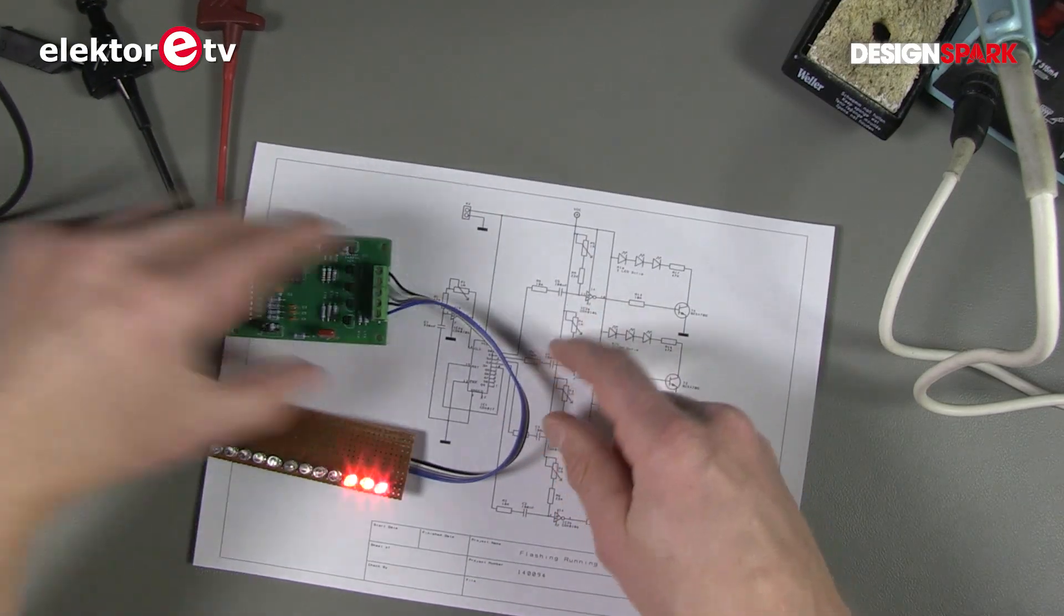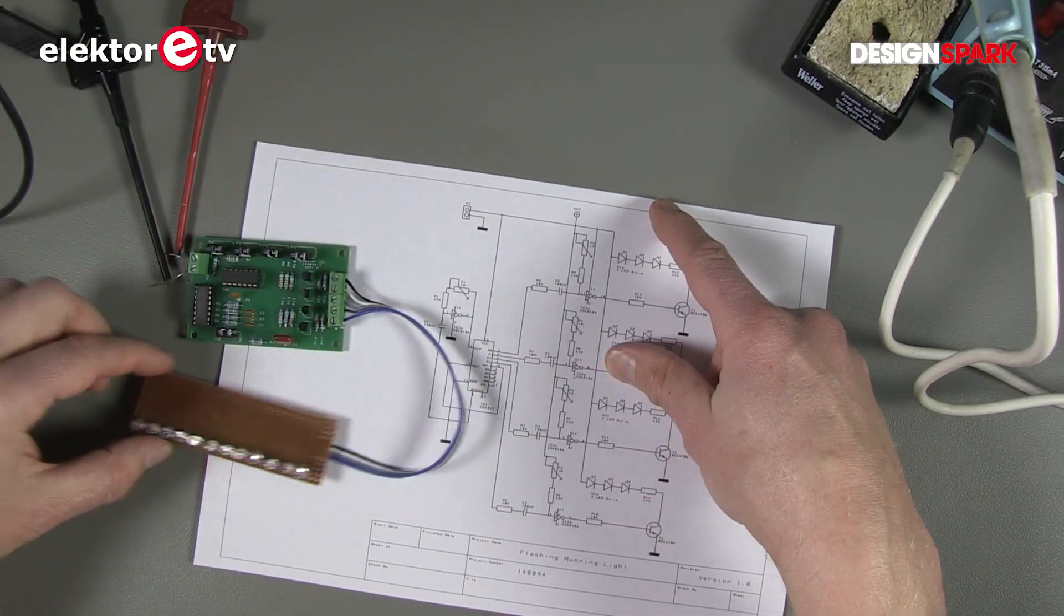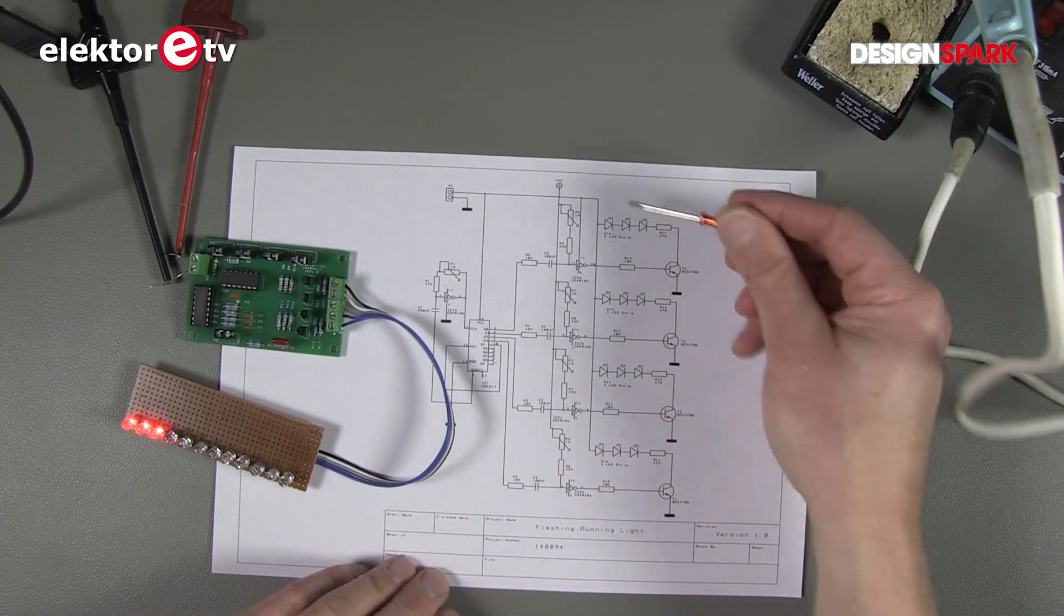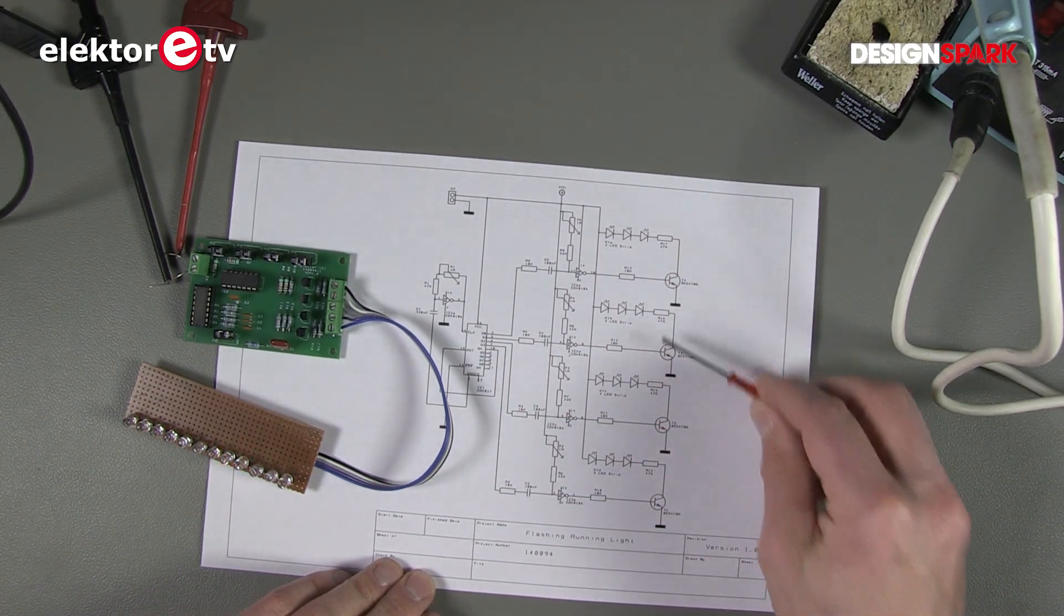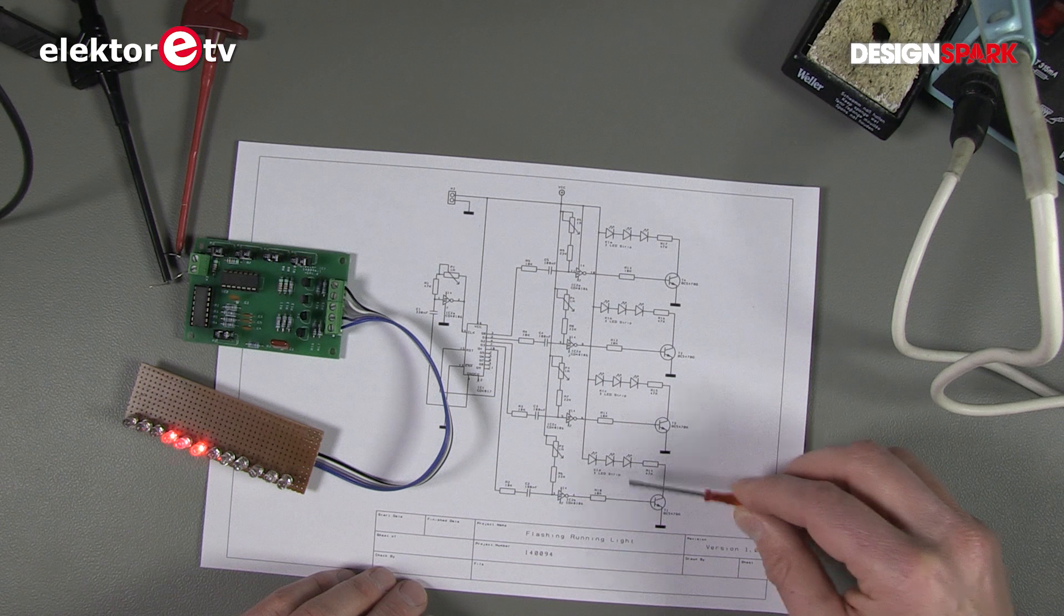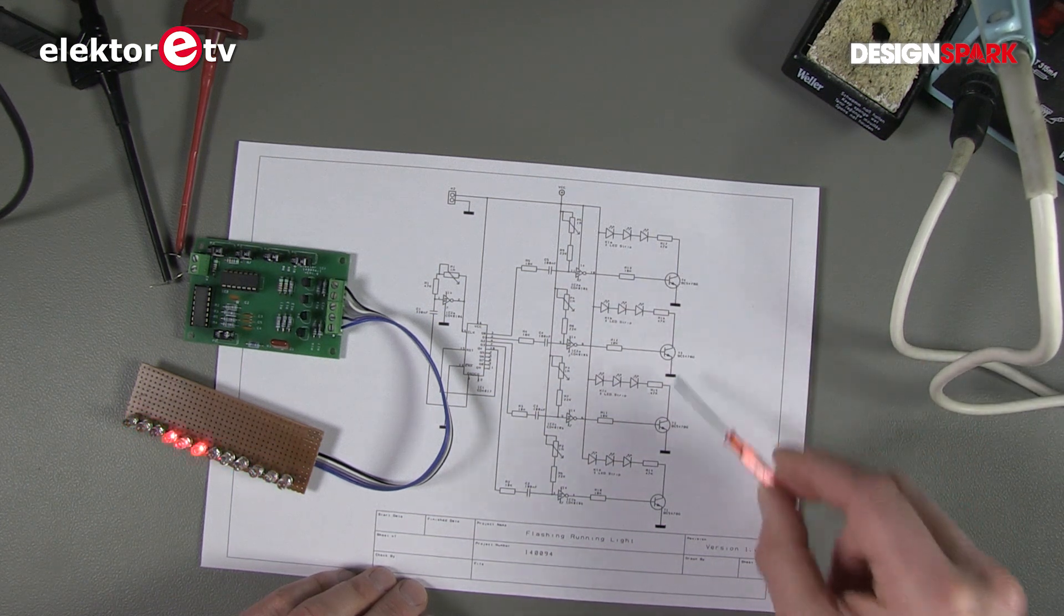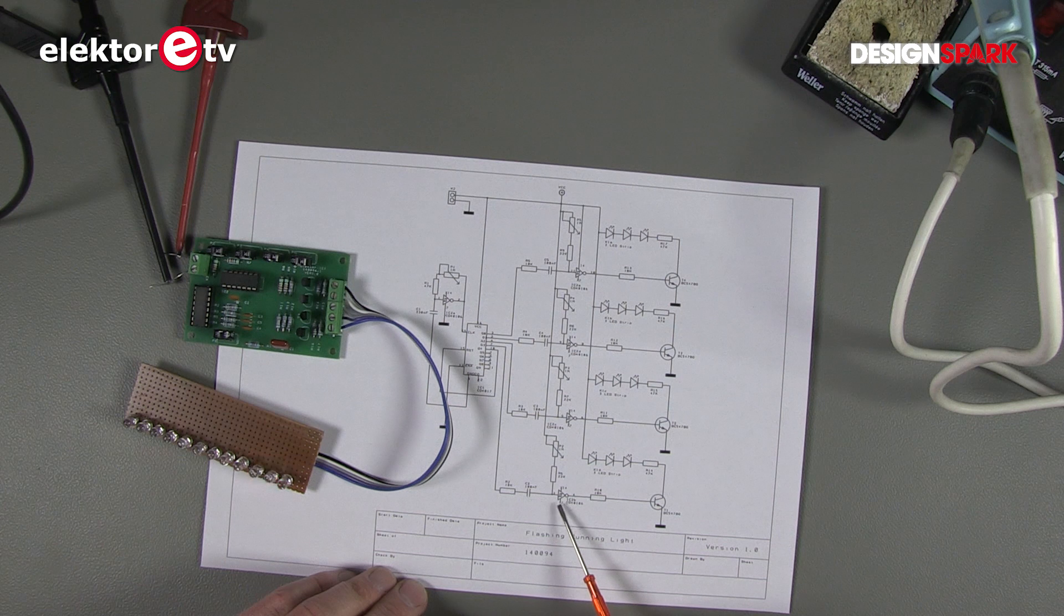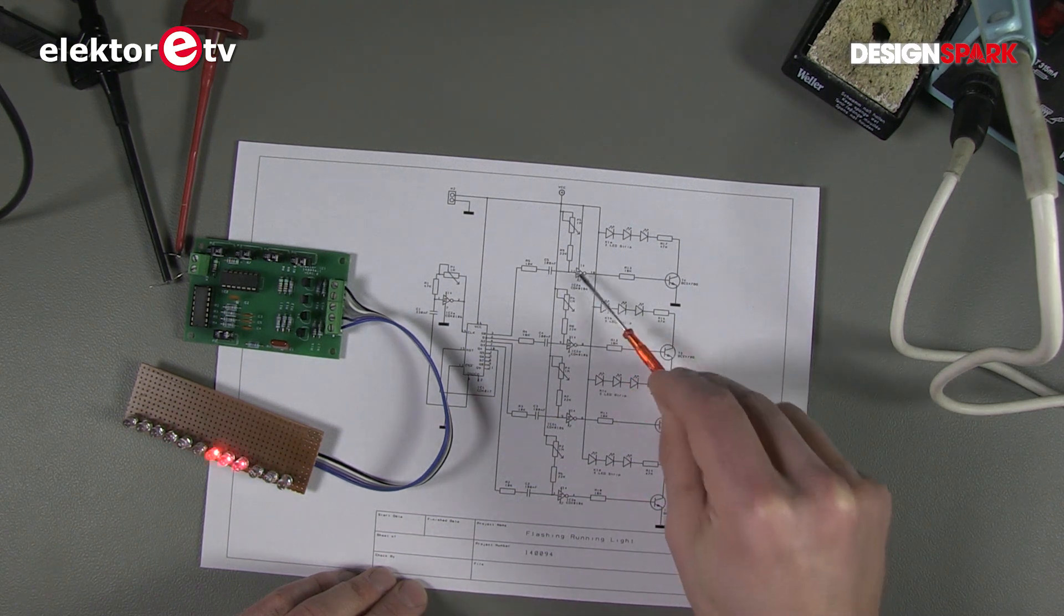The circuit diagram is very simple. We have four channels for the four groups of three LEDs. Four transistors driven by four buffers here, here and here.